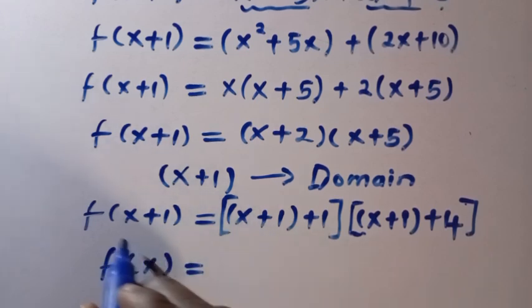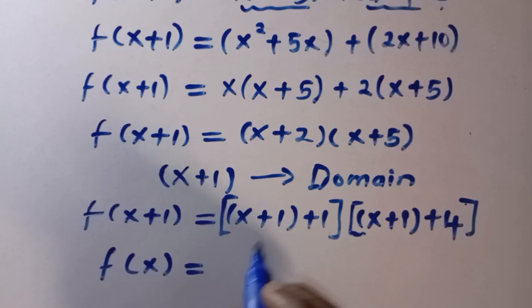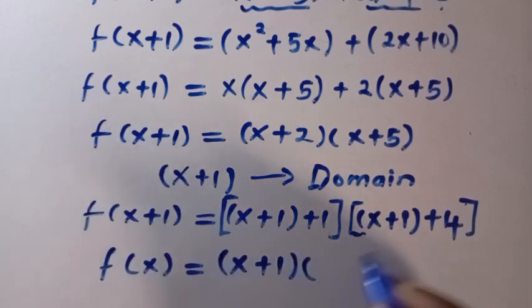Then, anywhere we see x plus 1 here, since we have changed this domain, all of them becomes x here, then x plus 1. So multiply by x plus x plus 4.